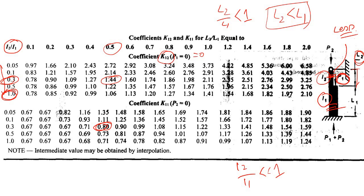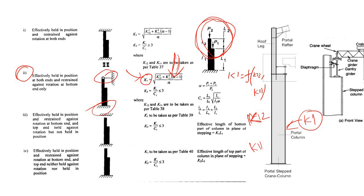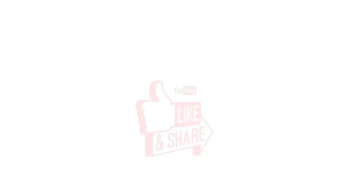The factor k12 corresponds to the case where the gantry reaction is zero — designing the whole column based on the top load only. If p2 is zero, you design based on gantry reaction only. These factors together account for all force effects in the effective length calculation. The derivation of these equations is not covered here, but the key is understanding the end conditions and force conditions that affect the design of a stepped column.